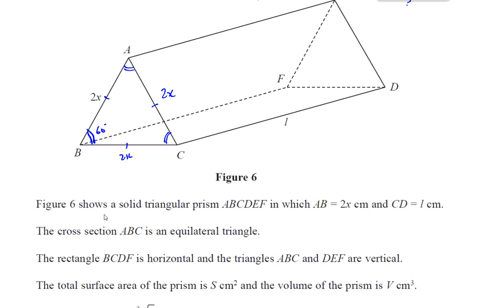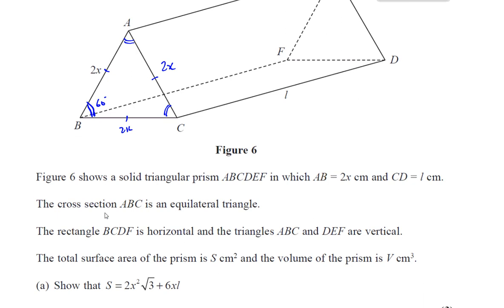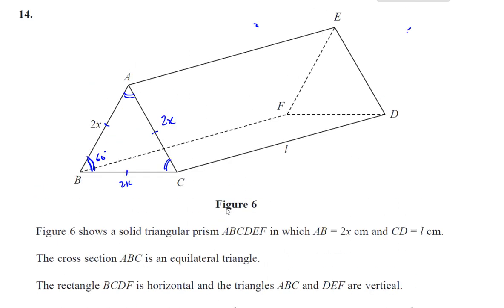The total surface area of the prism is S square centimeters and the volume is V cubed centimeters. Show that S is equal to 2x squared times root 3 plus 6xl. Okay, that's the surface area. Now the surface area is made up of the two triangular faces at the front and the back. It's a solid prism, so there's some surface there at the front and the back, plus the area of these three rectangles.